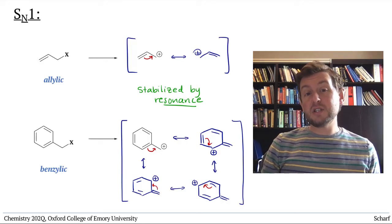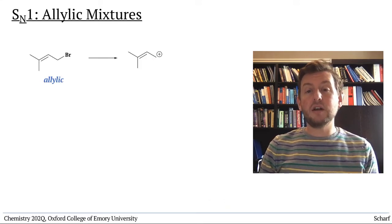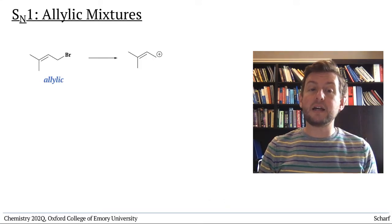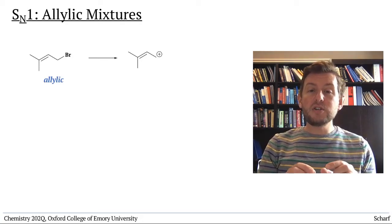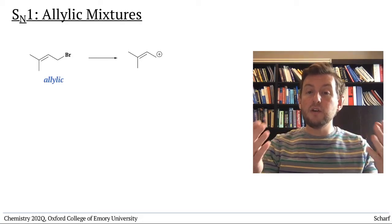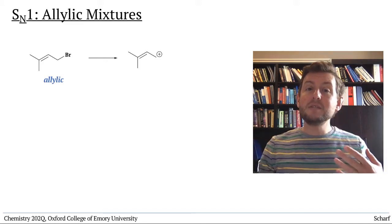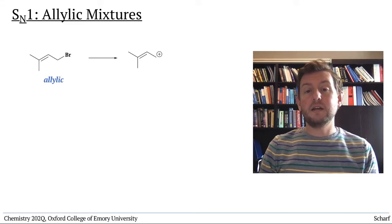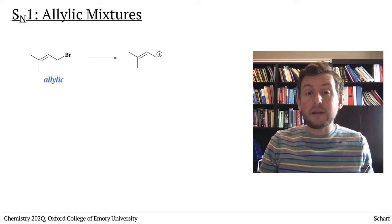In addition to speeding up SN1 reactions, there's one additional implication of the stability of allylic carbocations. Because the positive charge in these cations is distributed over two different carbon atoms, we sometimes see mixtures of products, because the nucleophile can attack either of those two carbon atoms.